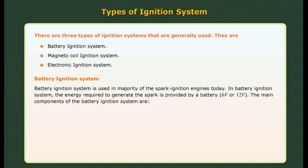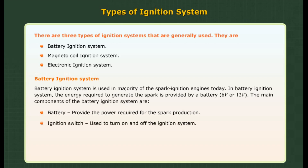Battery ignition system is used in the majority of spark ignition engines today. The energy required to generate the spark is provided by a battery of 6 volts or 12 volts. Main components include: battery, which provides the power required for spark production; ignition switch, used to turn the ignition system on and off; and capacitor, which consists of two metal plates separated by an insulating material.